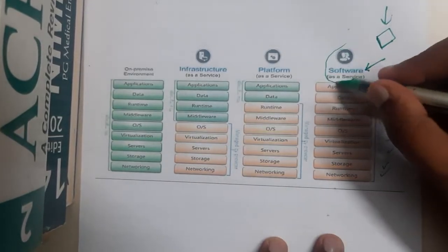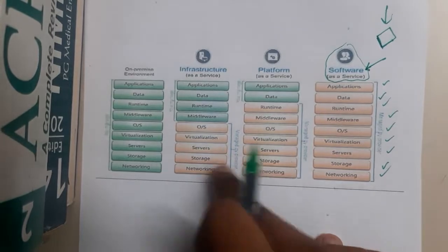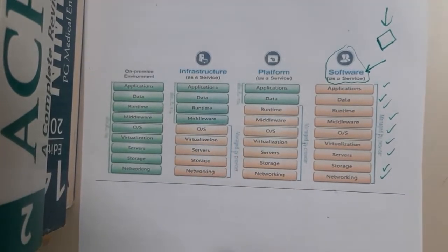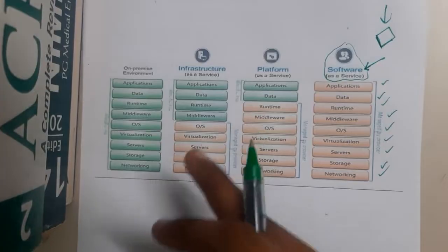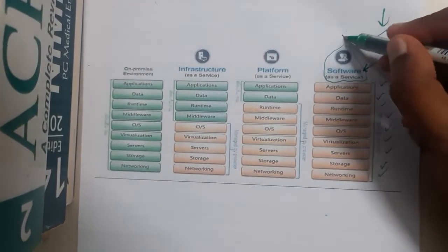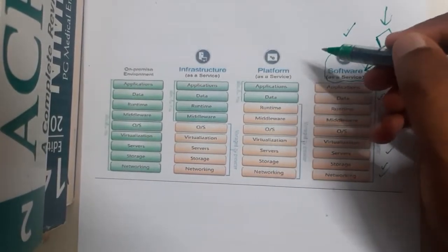You can draw these diagrams for software as a service, platform as a service, and infrastructure as a service in unit one services also. Once you are done with software as a service, let us move through platform as a service.